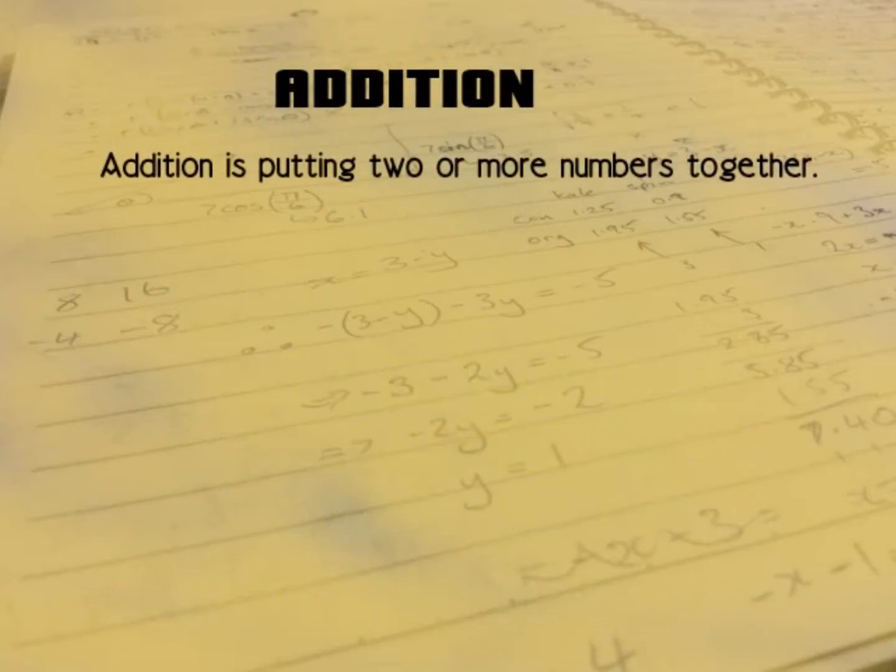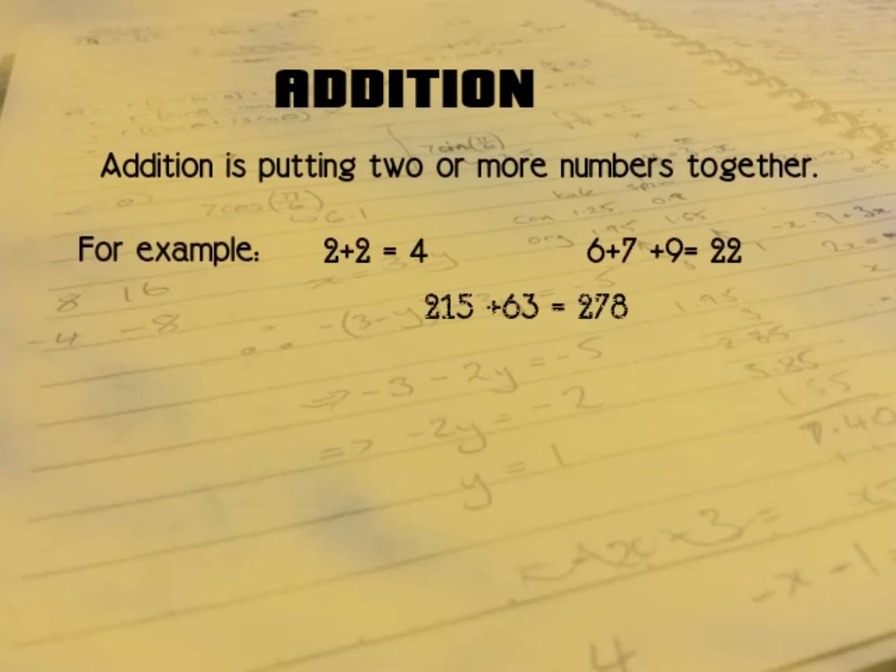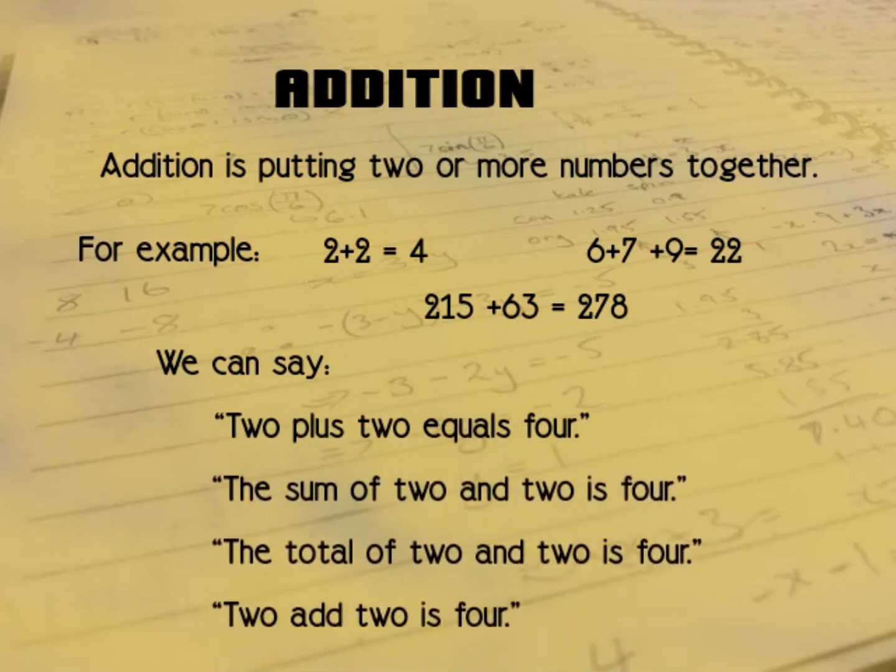Addition is putting two or more numbers together. So for example we can say that 2 add 2 equals 4, 6 add 7 add 9 equals 22, or 215 add 63 equals 278. And as with equality we can say this in different ways. You might also hear 2 plus 2 equals 4, or the sum of 2 and 2 is 4, or the total of 2 and 2 is 4.